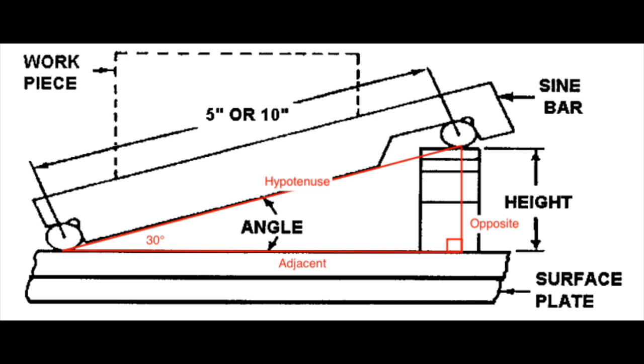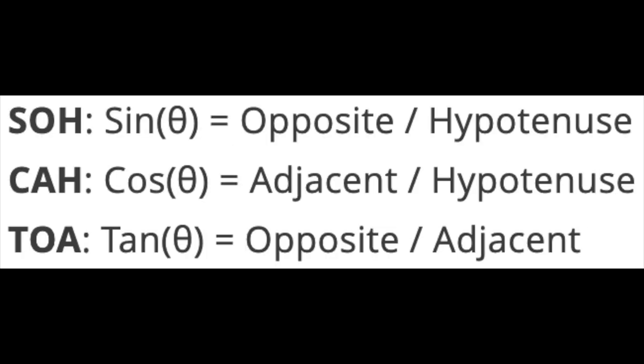Think back to the basic trigonometry ratios used to solve missing sides and angles for right triangles. The mnemonic is SOHCAHTOA. In this case we're going to use SOH. Sine of the angle equals the opposite over hypotenuse.